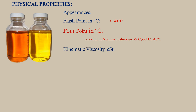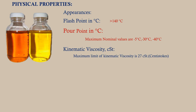Maximum nominal pour point values are minus 5°C, minus 30°C, and minus 40°C. Kinematic viscosity in CST: the kinematic viscosity of transformer oil is the resistance to continuous flow of oil without the effect of external forces. Low viscosity means low resistance to flow. Viscosity affects the cooling performance of the transformer, so good transformer oil should have low viscosity. The maximum limit of kinematic viscosity is 27 CST.